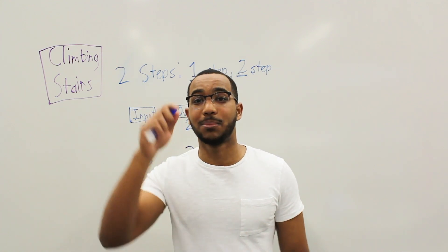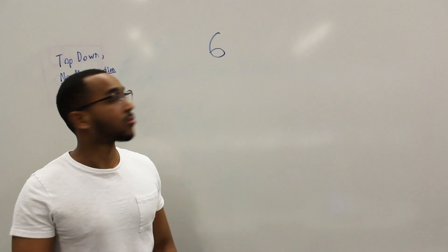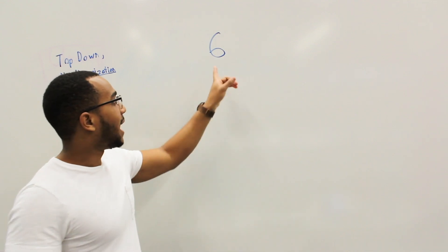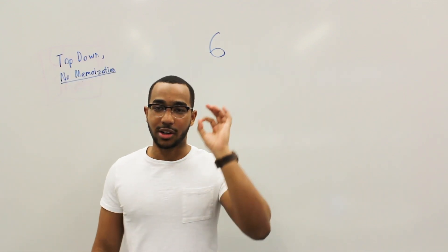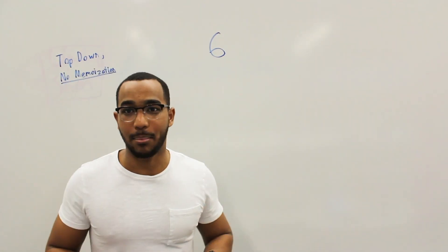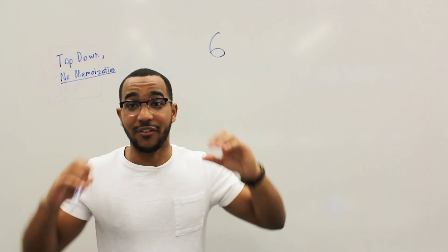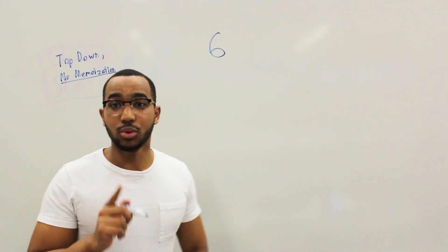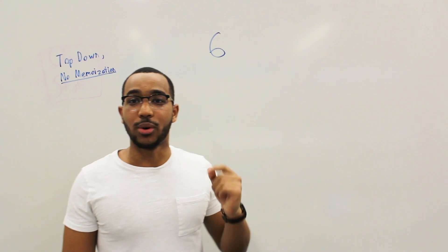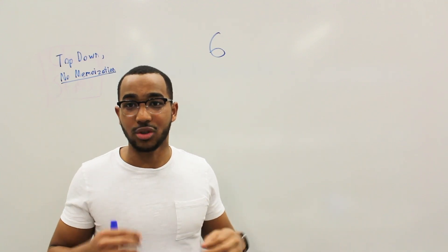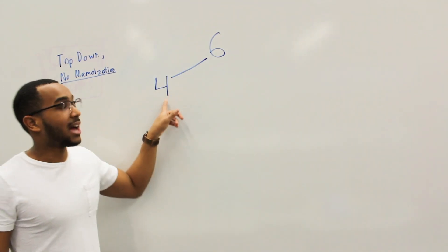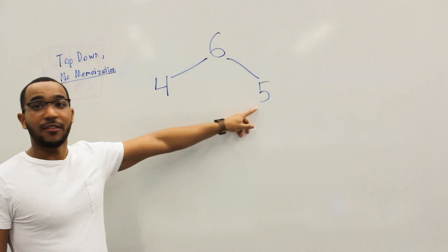What I want to do is look at the top-down approach with no memoization at all, and then we'll see why we need the memoization. Say I need to take six steps. At every step, my choice is either a one-step or a two-step. If I have six steps and take a two-step, I have four steps left. If I take a one-step, I have five steps left.